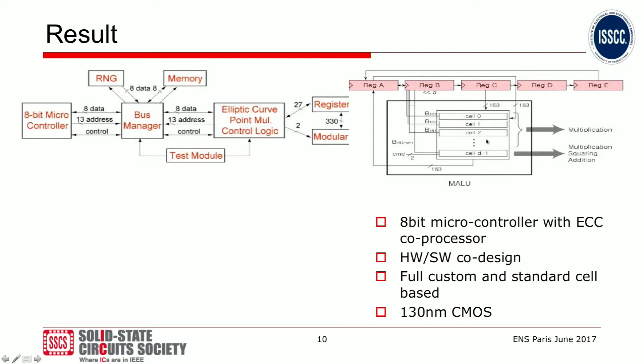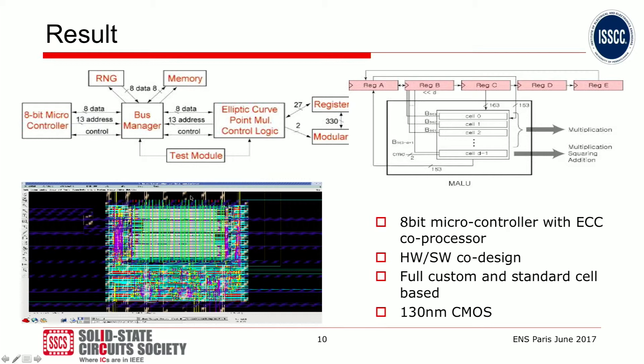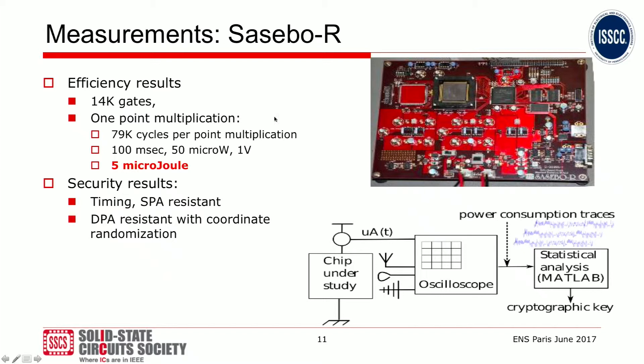This is more detail on the actual processor, which has a set of dedicated registers and a very wide instruction word. On the layout you can see it's a combination of standard cells and full custom. The full custom regular array is there to introduce side channel resistance, to have balanced load lines and so on. What's important for security is that you measure not just efficiency but also the security results.